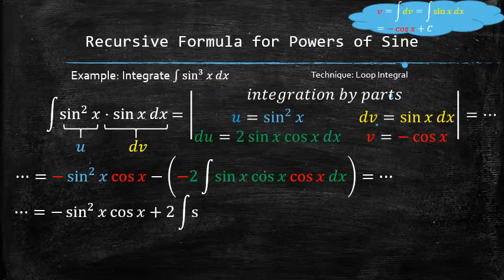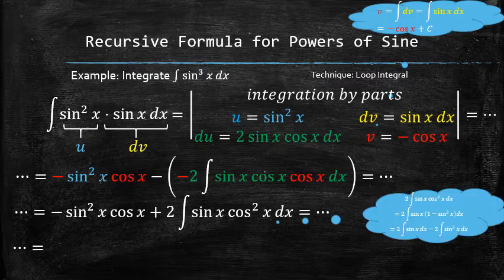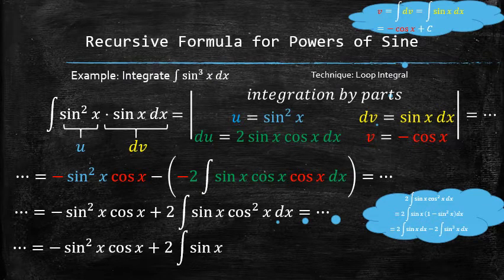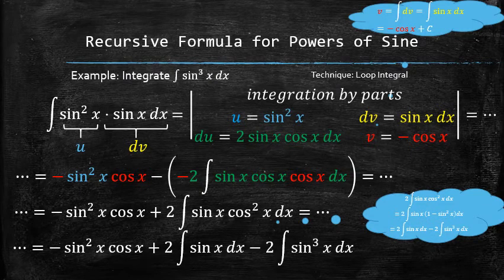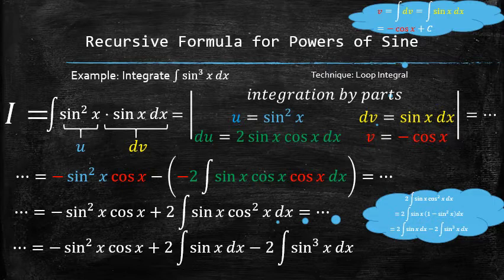To find the new integral, we use the Pythagorean identity to rewrite the square of cosine, then use the linearity of the integrals to split the integral into one simple one and one that is the original integral, which creates a loop. We introduce i to replace the original integral everywhere it appears.